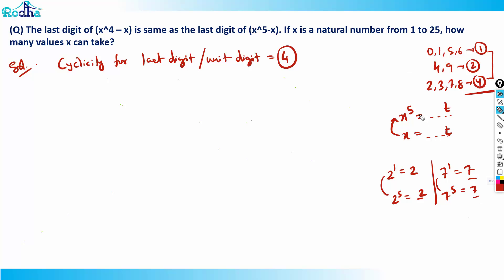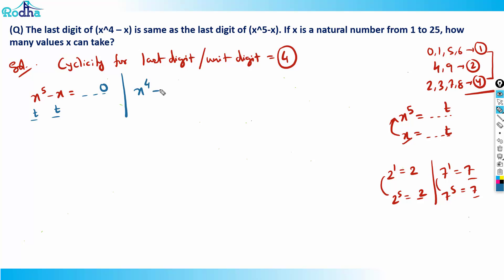So if x ends in digit t, then x⁵ also ends in t (since we go up by 4 powers). That means x⁵ - x ends in t - t = 0. Similarly, x⁴ - x also ends in 0. So both expressions have last digit 0, and the condition that their last digits are equal is satisfied whenever both end in 0.